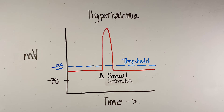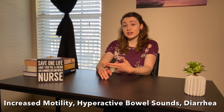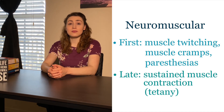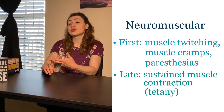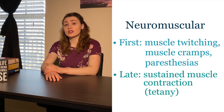Just remember: high potassium equals a higher resting membrane potential. In the gastrointestinal tract, this makes smooth muscle hyper-excitable, so we will see things like increased motility, hyperactive bowel sounds, and diarrhea. In the neuromuscular system, hyperactive muscles lead to muscle twitching, muscle cramps, and paresthesias.